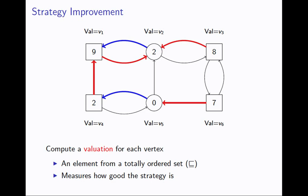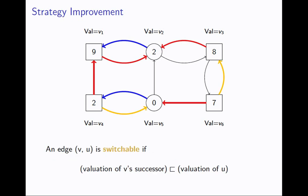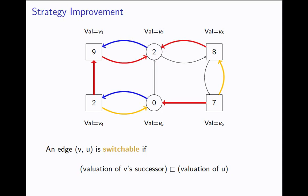Evaluation is some element from a totally ordered set. For easier games like mean payoff games, evaluation is just a number representing how good a vertex is. Each vertex is assigned a valuation measuring how good the red strategy of player even actually is, and some valuations are better than others. You can then go through each of player even's edges and determine whether they are switchable — if a vertex is currently getting valuation V1 but could switch to get valuation V5, and V5 is better than V1, then that edge is switchable.